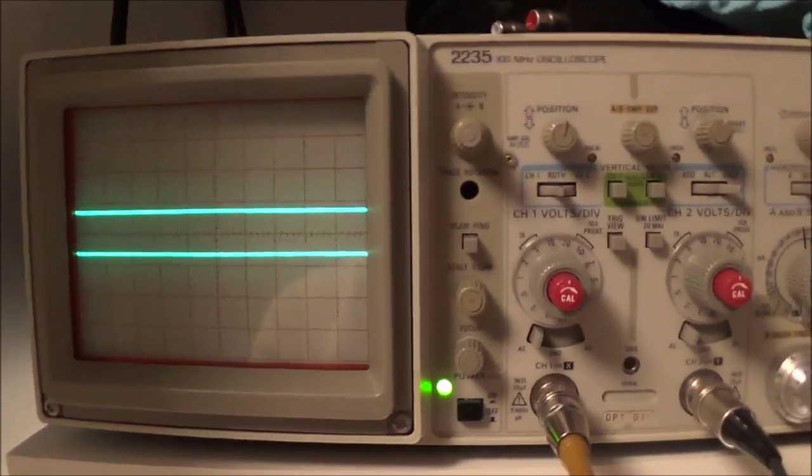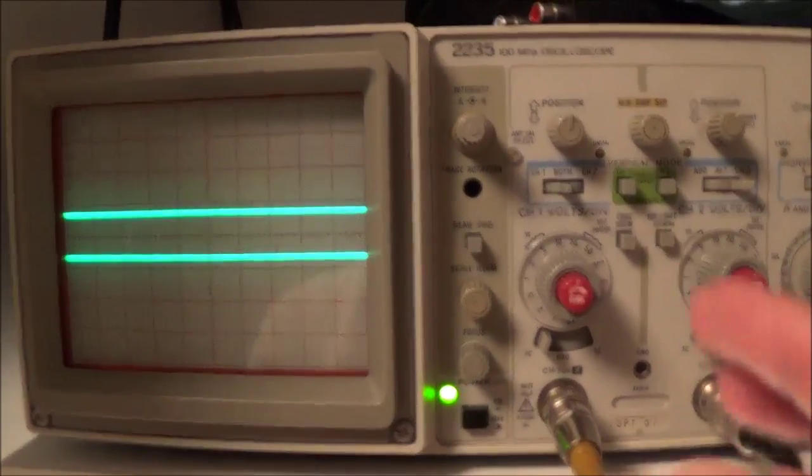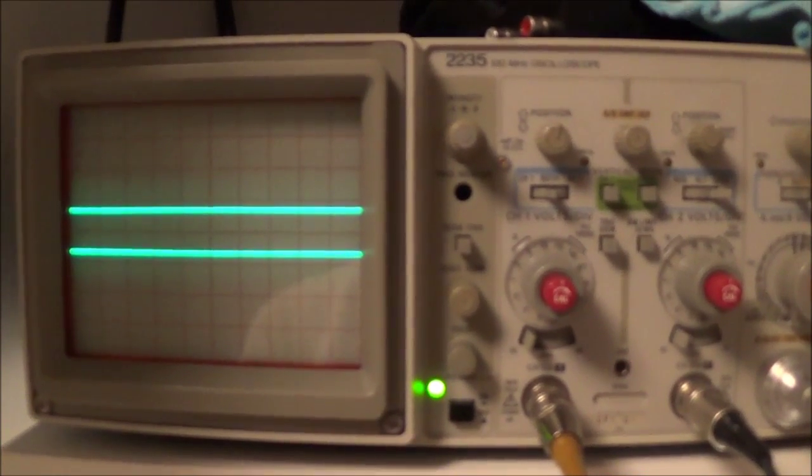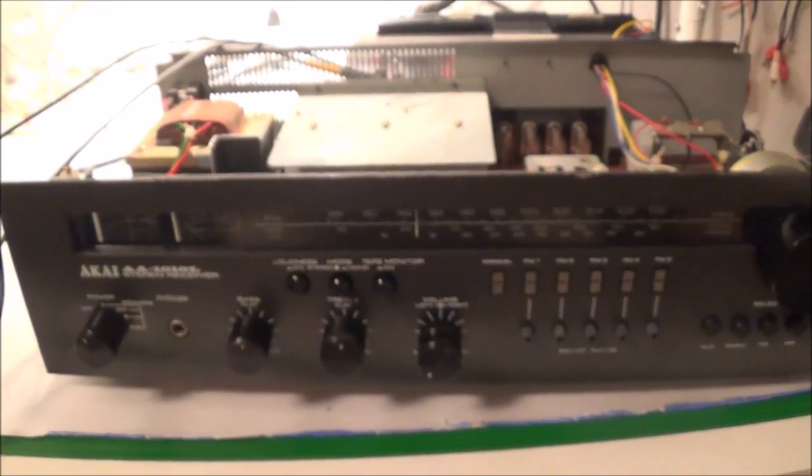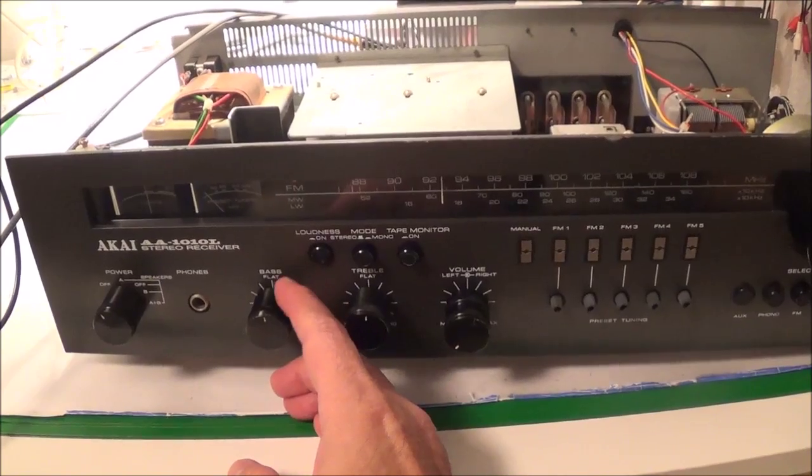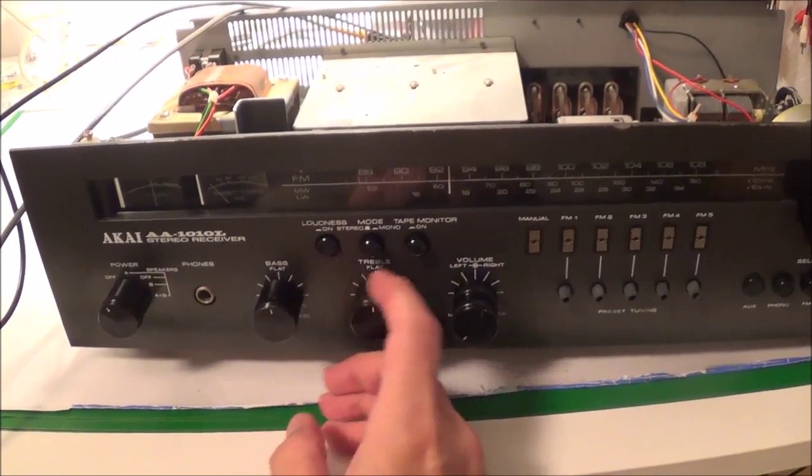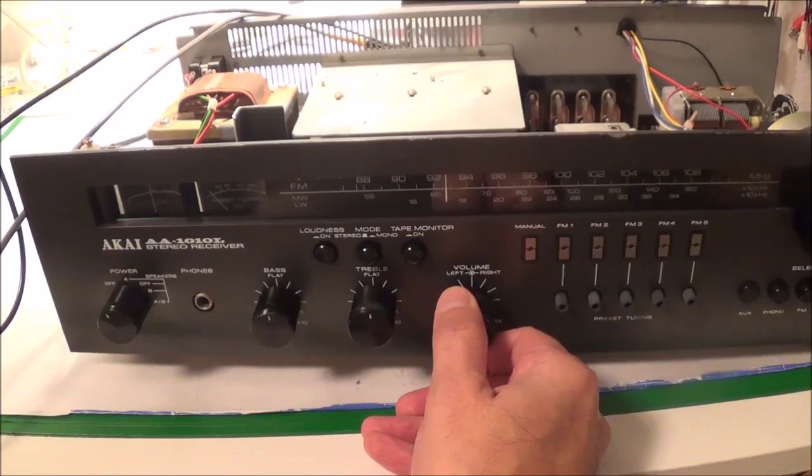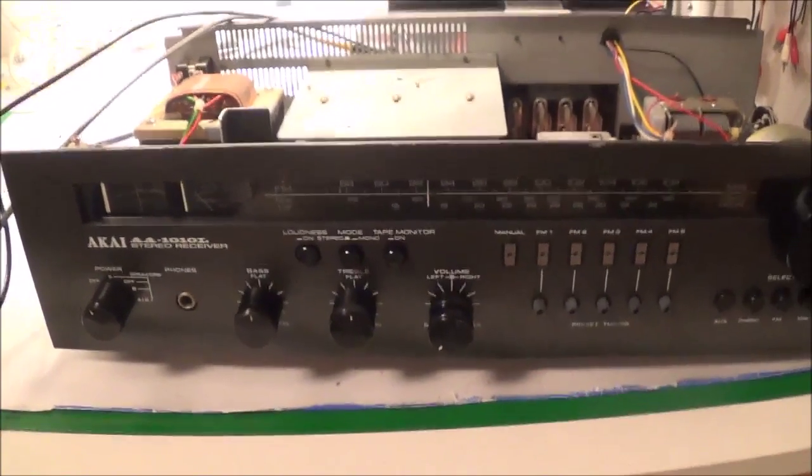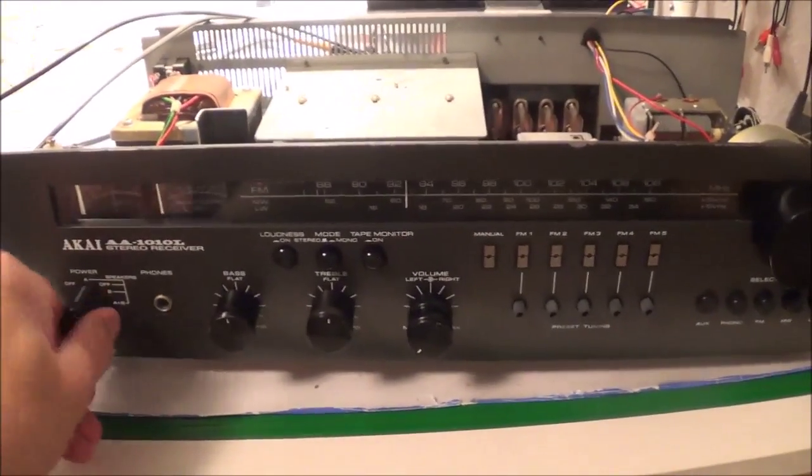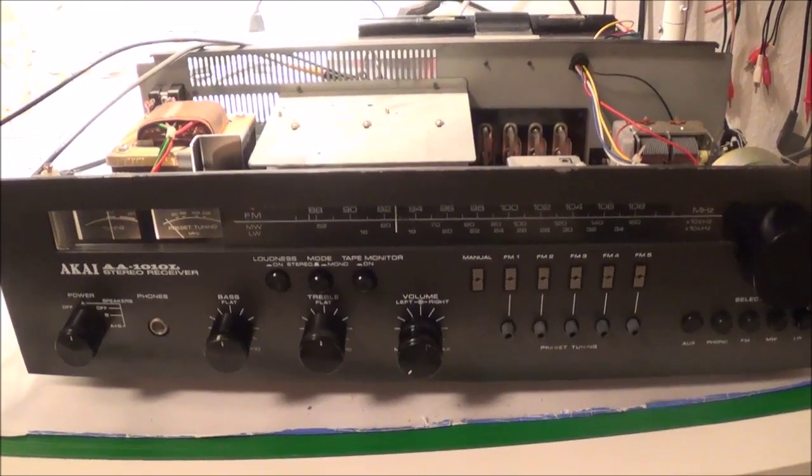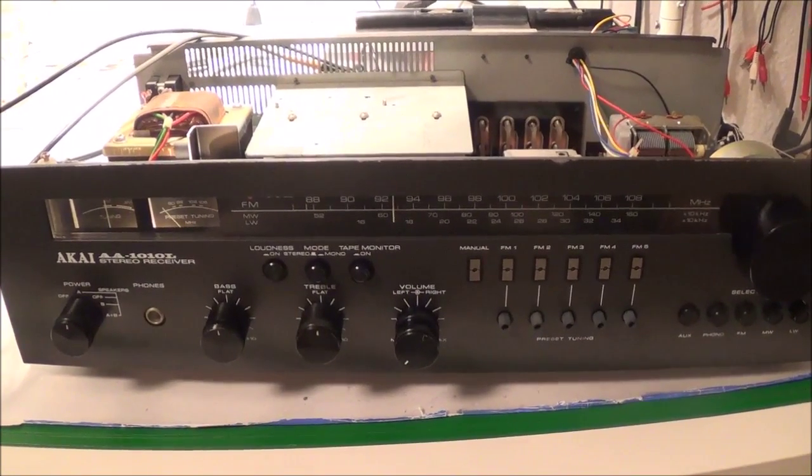Here you can see my oscilloscope set up and ready to go. It's at 5 volts per division at the moment. As far as my receiver is concerned, I've got the bass in the neutral position, the treble neutral position. At the moment my volume is turned down, my aux button is pressed in. I'm going to go ahead and turn the receiver on, and next I'm going to start up my signal generator.